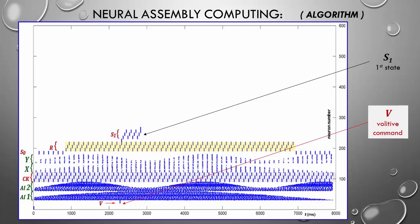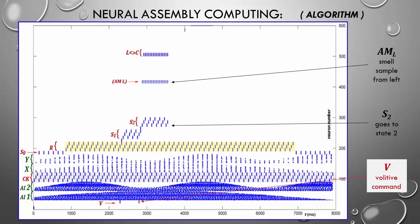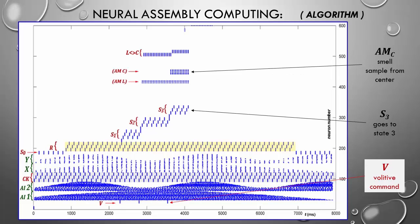When this assembly fires, it means a volitive command was received. So, the finite state automaton goes to the state S1. It commands another automaton for turning the head left. After that, another volitive command takes a sample from the input's smell representation and memorizes it. This is a short-term memory which retains an analog value. Next, the head is turned to the central position and another volitive command takes a smell sample. Likewise, it is memorized by these assemblies.